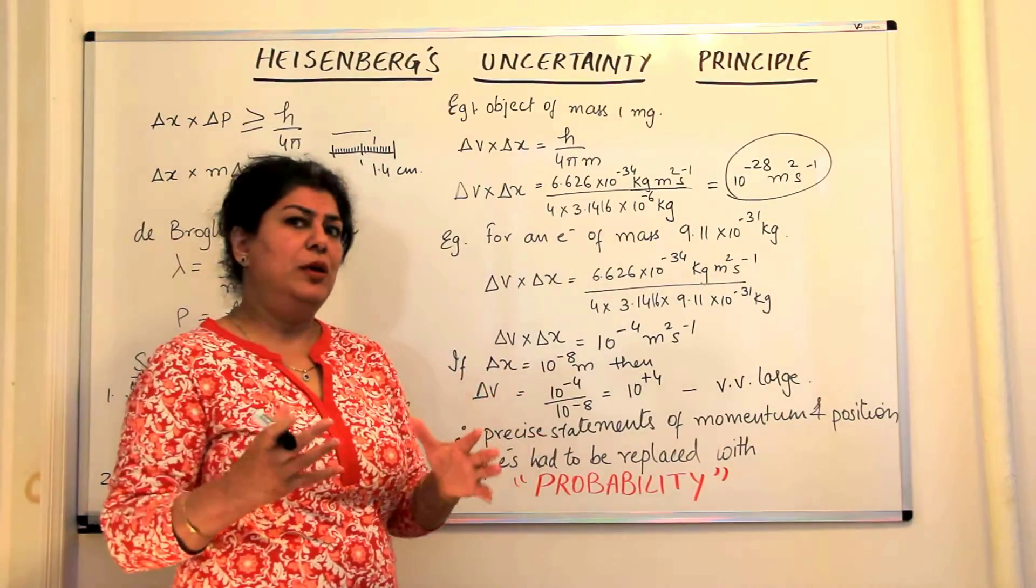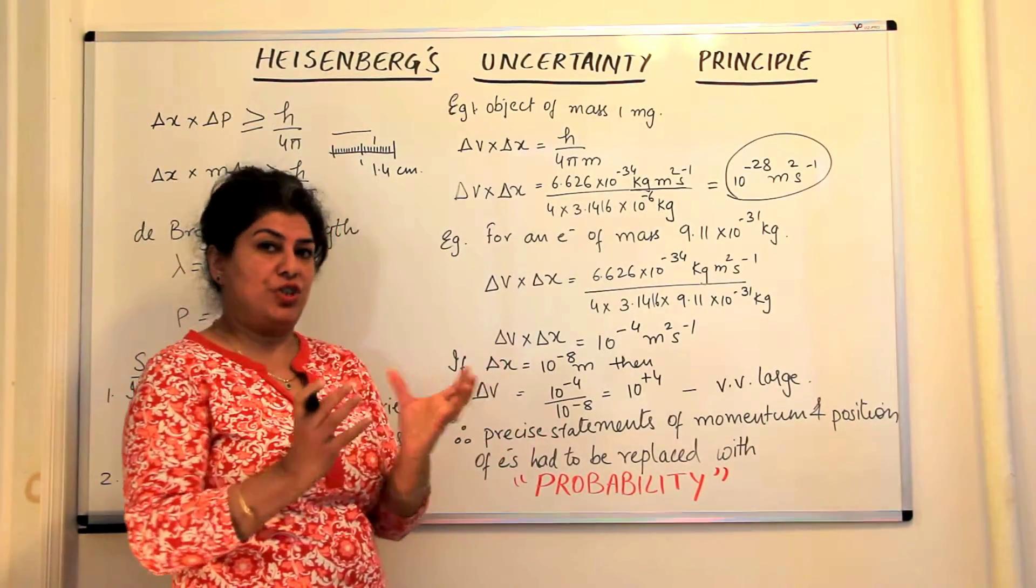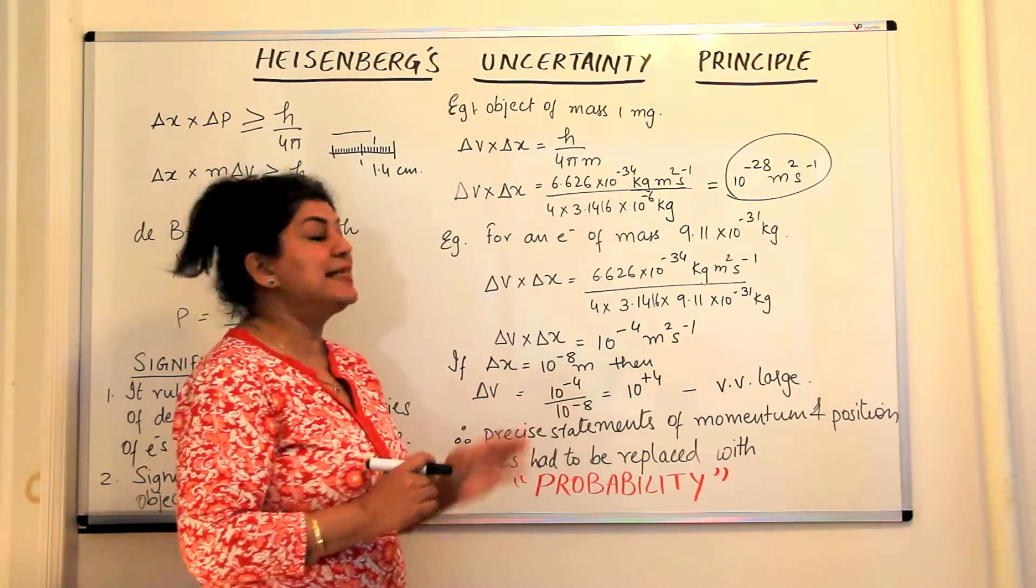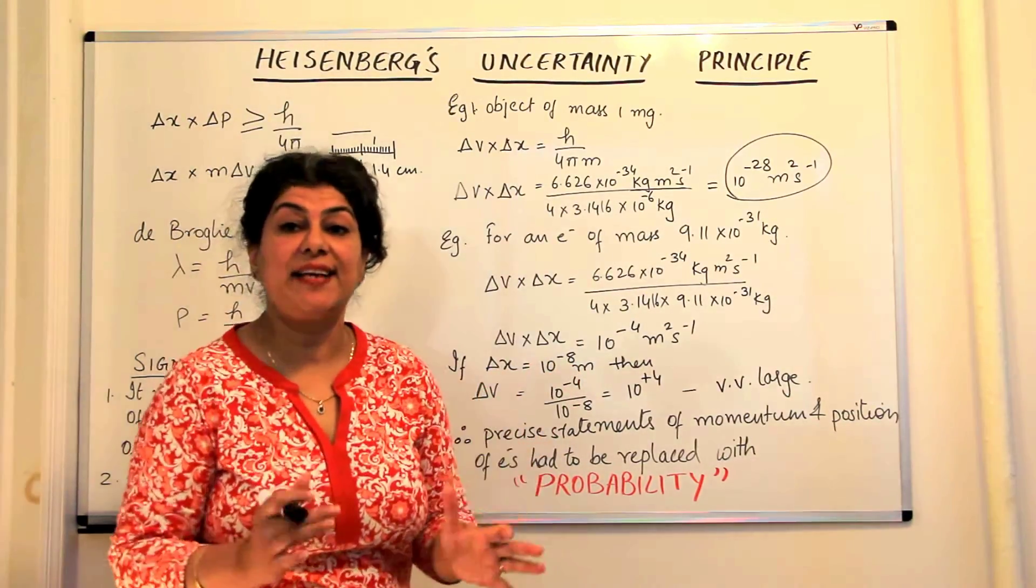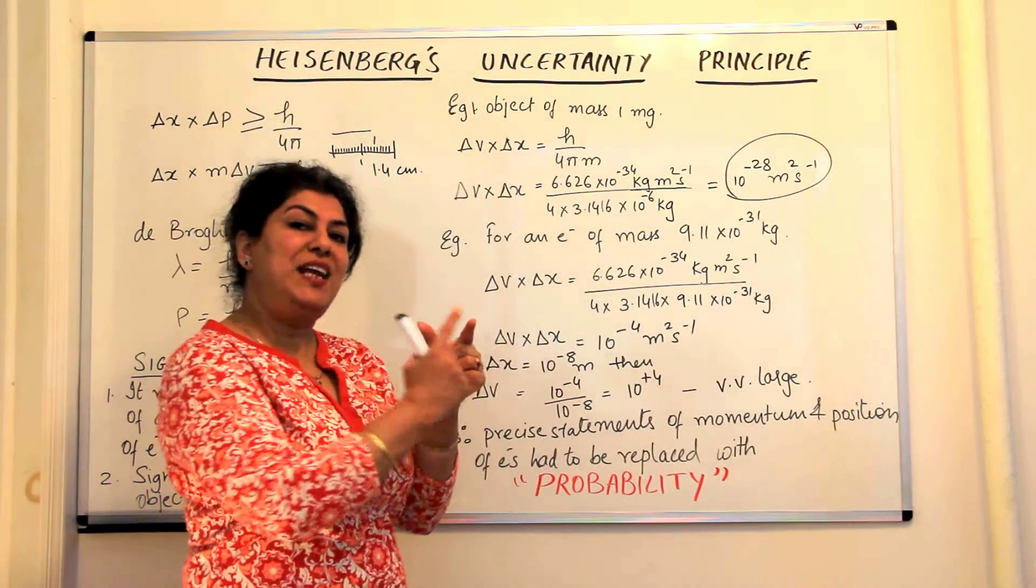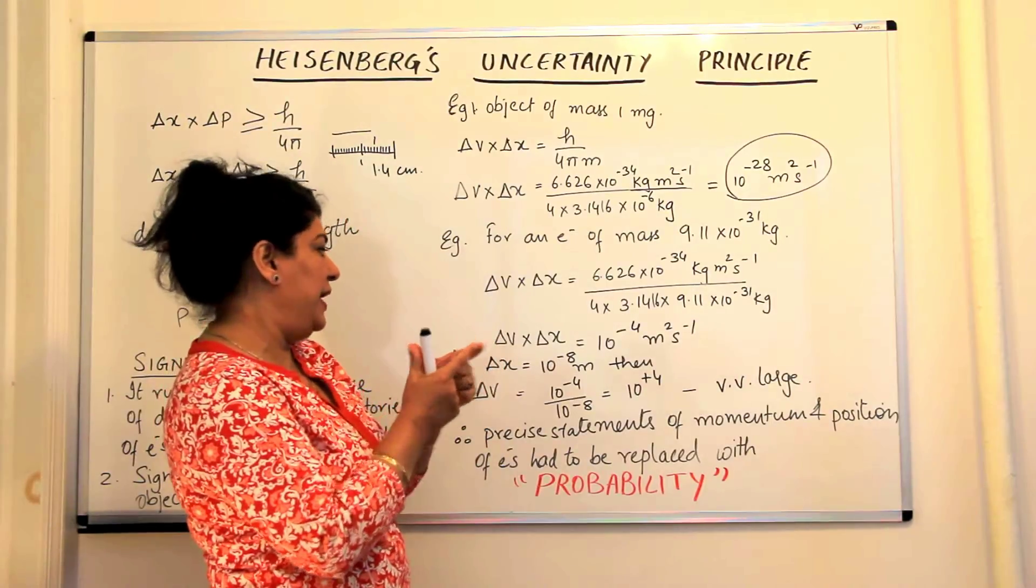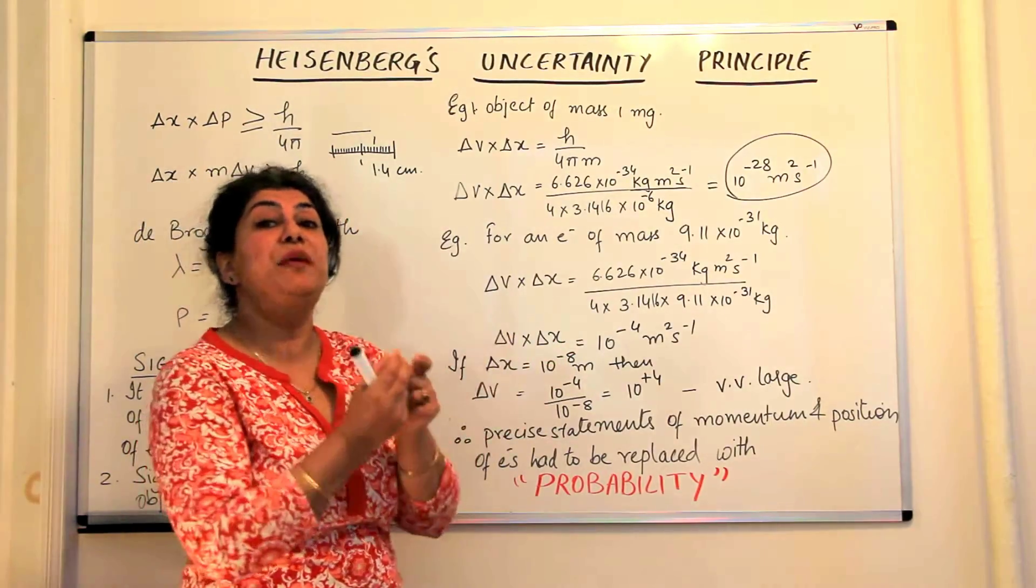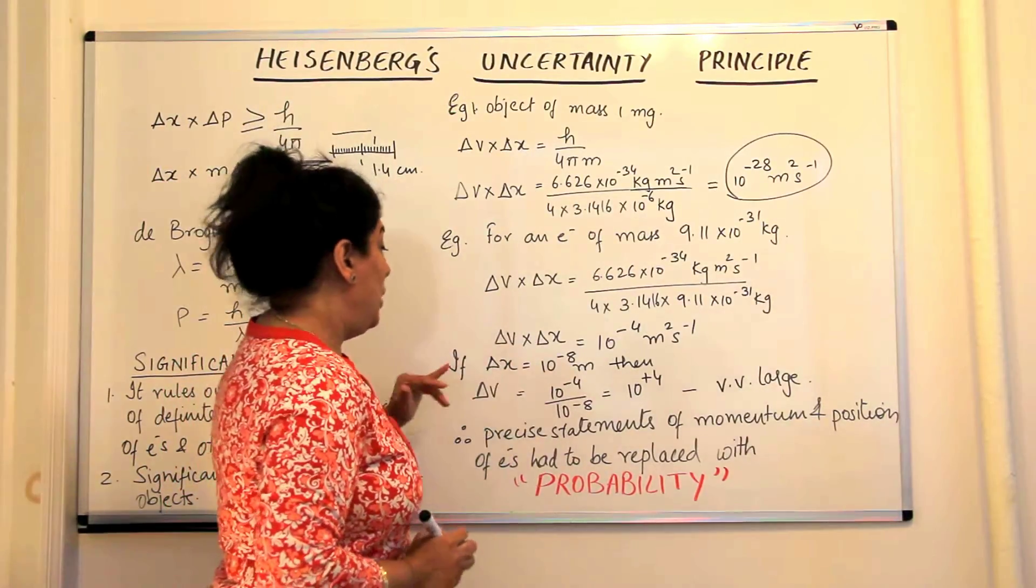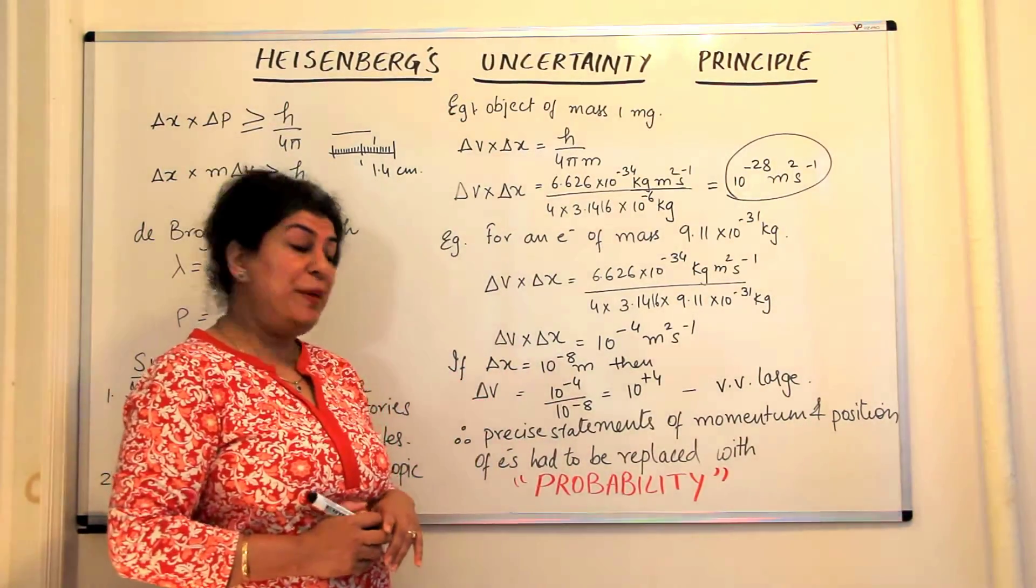Let us assume that the error in position is on the extent of 10 to the power minus 8 meters. That is, delta x is 10 to the power minus 8, which means the electron may be present anywhere within a range of 10 to the power minus 8 meters, which is very small. So if that is the case, what would the value of delta v be?